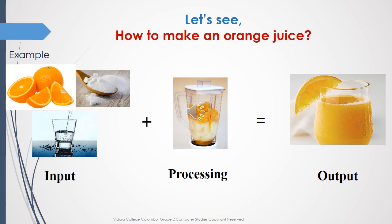Let's see how to make an orange juice. What are the things we need? Orange, sugar, water. Use all those things and mix. Finally, you can drink juice.